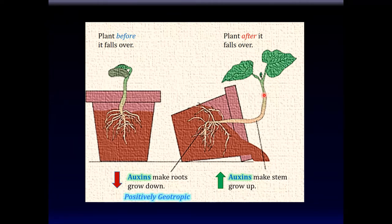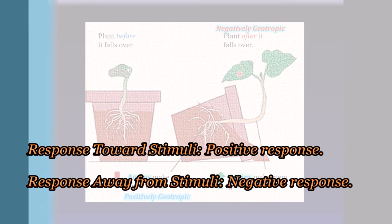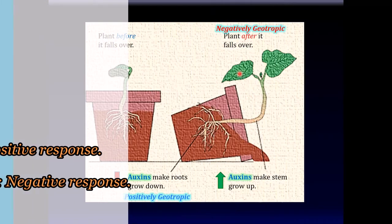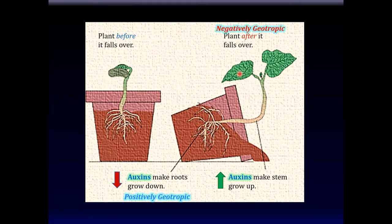If the plant response is towards the stimuli, that's called a positive response. In this case, the roots grow towards the ground — that's a positive geotropic response. If the response is away from the stimuli — in this case gravity — that's called negative geotropism. For any stimuli, if the response is towards it, like in phototropism, that's a positive response; if the response is away from the stimuli, that's a negative response. So the roots growing towards the ground is a positive geotropic response, and the stem growing away from gravity towards the sky is a negative geotropic response.